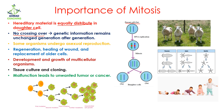For example, Dolly the sheep was produced by cloning. The cloning process actually utilizes the process of mitosis, in which cells from the parent, when transferred to the daughters, will have the same characteristics. You can see that all the Dolly sheep look alike.